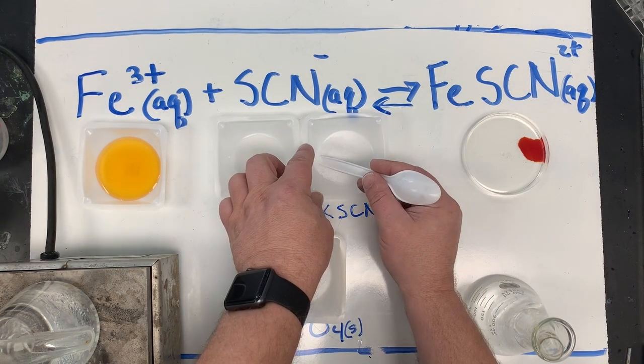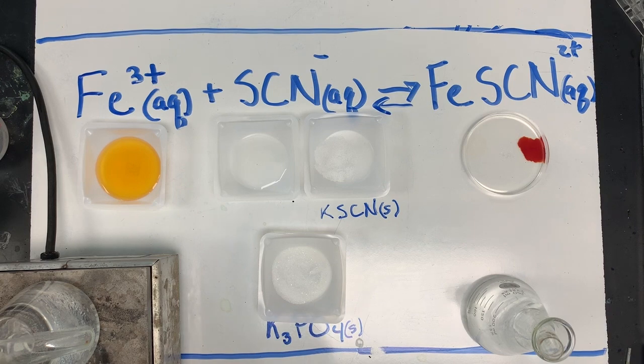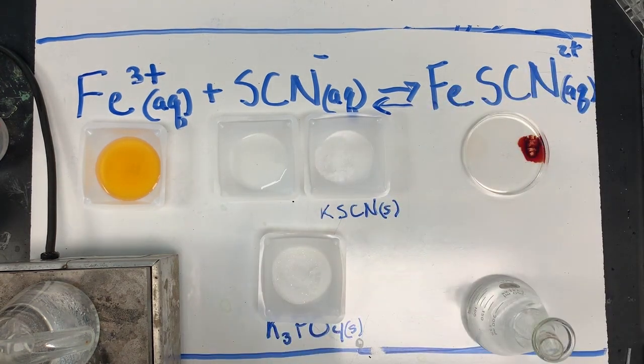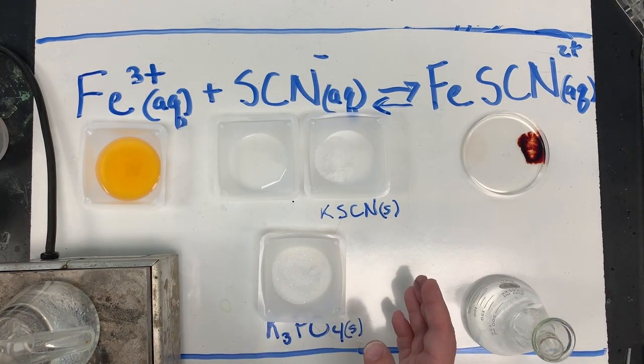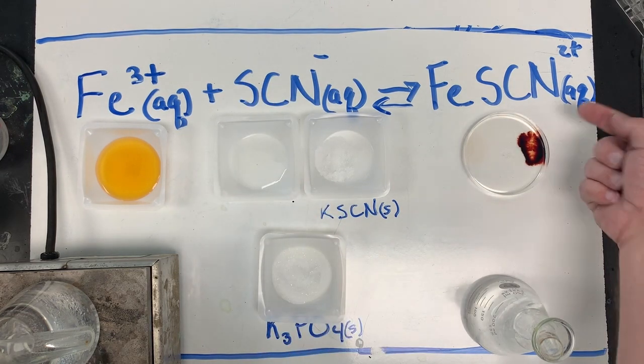All right, let's try another chemical. This time I'm going to put this one over here and I'm going to place another over here. What's going on? In our solution, where do we find the iron 3 plus? In our solution, where do we have thiocyanate? Where do we have the complex ion?